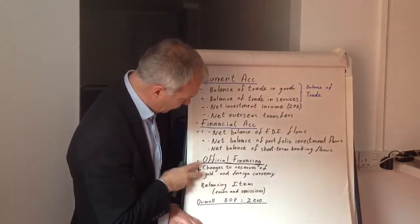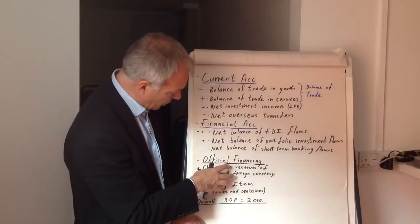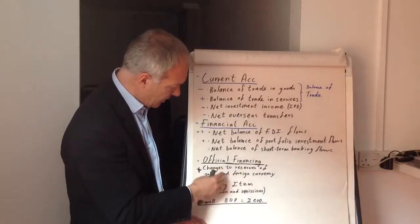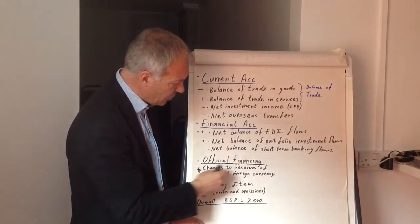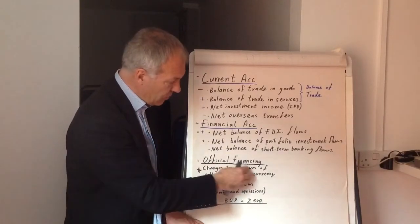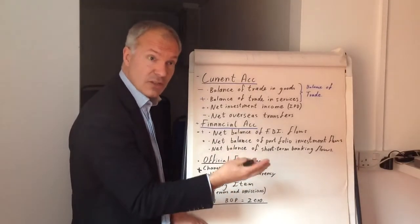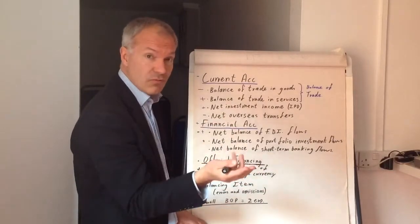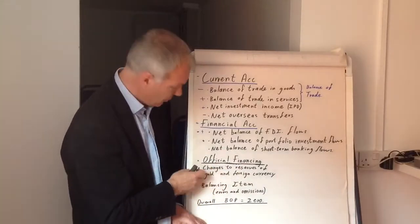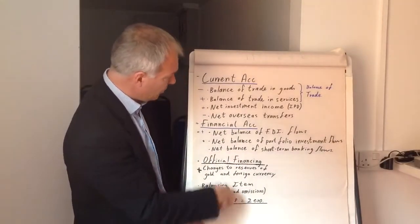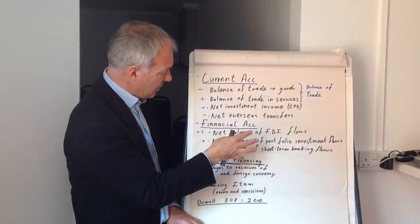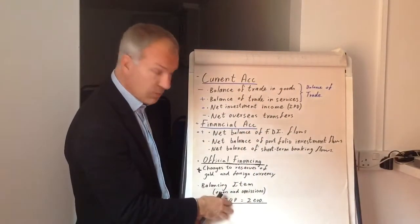The key thing is official financing. We've got the gold and foreign currency reserves held at the Central Bank, the Bank of England. If the Bank of England were to sell gold and buy sterling, that would be a positive on the balance of payments. If it were to sell its assets such as foreign exchange reserves of dollars or euros to buy pounds, that would also be a positive. Overall, the balance of payments comes out at zero — if it's negative on the current account, it's positive on the financial account, and it becomes zero.